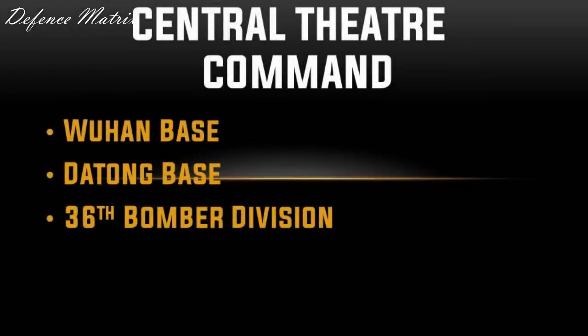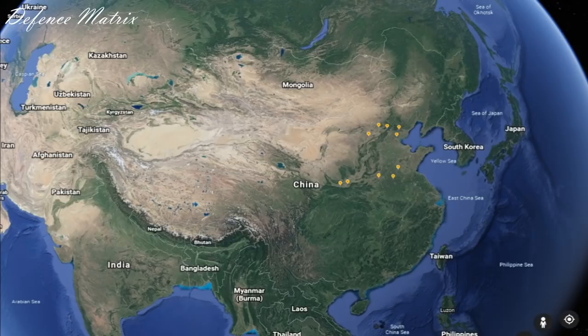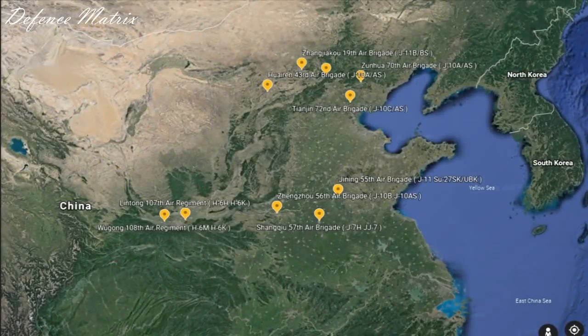Finally Central Command में तीन bases हैं: Wuhan Base, Datong Base, और 36th Bomber Division। Map में इन तीनों bases को देख सकते हैं — ये Northern Command के bases के काफी close हैं। Zoom in करने के बाद पता लगता है कि यहाँ इन्होंने अपने सारे modern aircrafts लगा रखे हैं। ये aircrafts Russia, South Korea, और Japan को contain करने के mindset के साथ बनाए गए हैं।